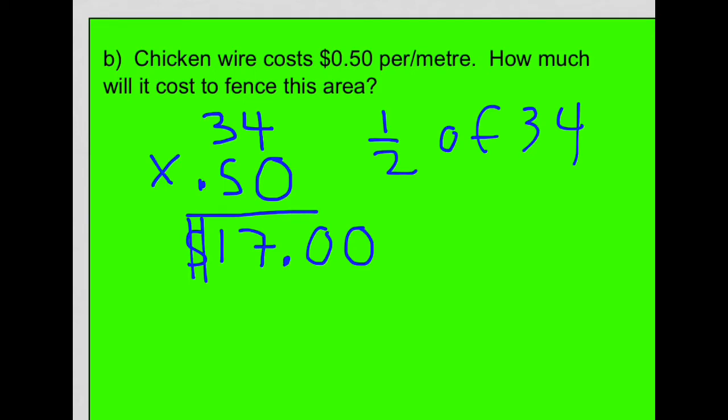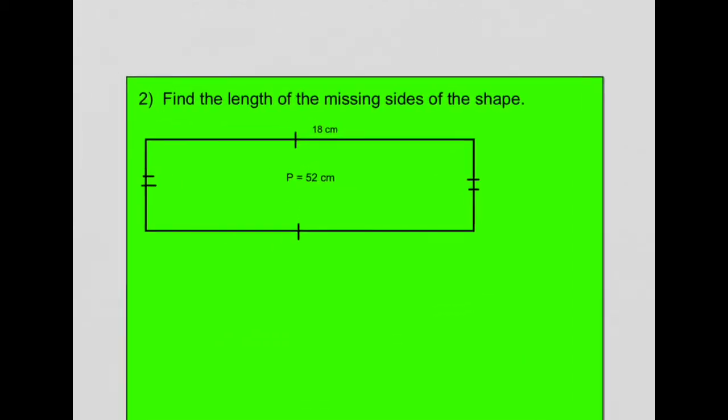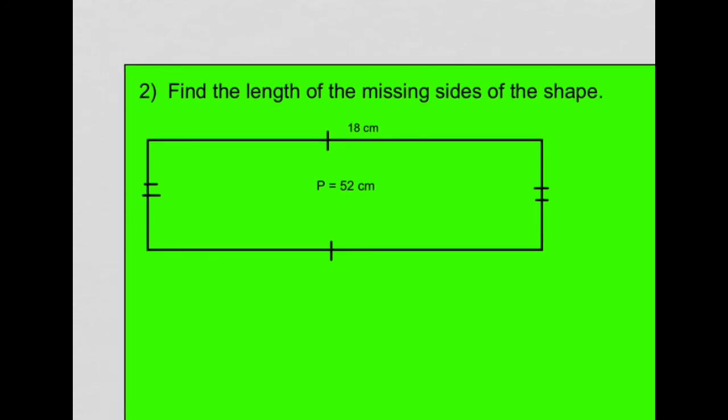One last perimeter question. So it says, find the missing sides of this shape. We've got a rectangle here. And what we know about rectangles is that its opposite sides are equal. So we've got these two opposite sides are equal, and these two opposite sides are equal.